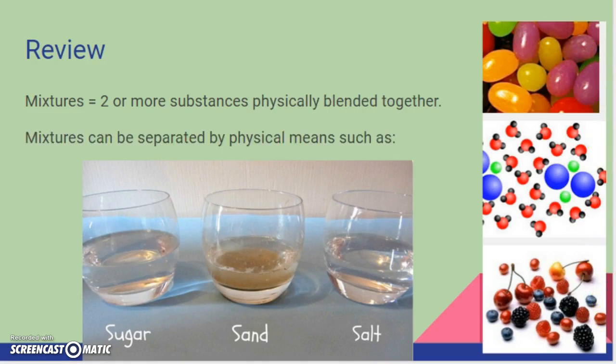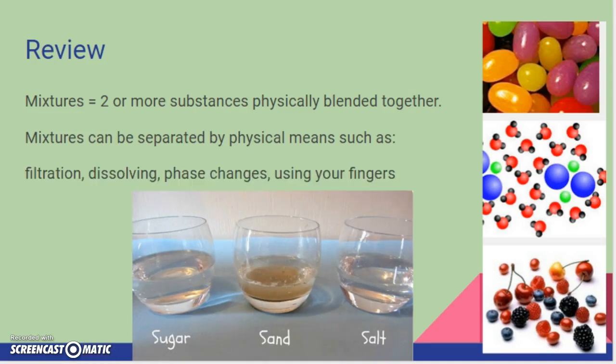So of course here's some examples of some mixtures. Some you can see you can easily pick apart with your fingers. Some if you have a solid and a liquid they're going to need to be separated in different ways. So mixtures can be separated by physical means such as what? Well, one way is filtration. You could use filter paper to filter the sand away from the water. You could use dissolving, phase changes, or in the case of larger particles you could just use your fingers and pick out all the pink ones.